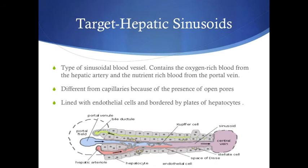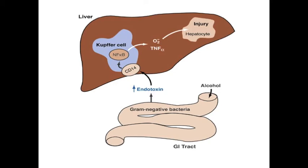The target of Dianabol that we are focusing on are the hepatic sinusoids. Hepatic sinusoids are a type of sinusoidal blood vessel. They contain the oxygen-rich blood from the hepatic artery as well as the nutrient-rich blood from the portal veins. Sinusoids are different from capillaries because of the presence of open pores. Hepatic sinusoids are lined with endothelial cells and bordered by plates of hepatocytes. Along with hepatocytes, they can transport small molecules to and from the bloodstream. Also associated with hepatic sinusoids are Kupffer cells — macrophages that can pick up and destroy foreign molecules such as bacteria. Ultimately, hepatic sinusoids play an essential role in blood movement.